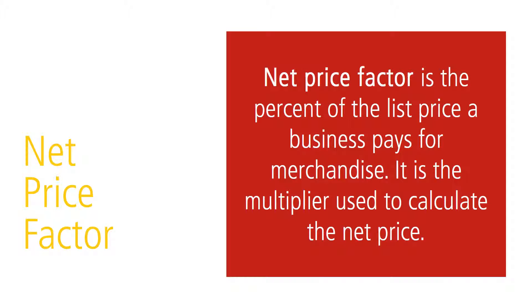The list price of an item is considered to be 100%. If, for example, the trade discount on an item is 40% of the list price, the net price will be 60%, because the two must equal 100%. This 60% — the complement of the trade discount, calculated as 100% minus 40% — is the portion of the list price that's paid. Known as the net price factor, it is usually written in decimal form.